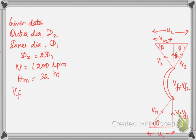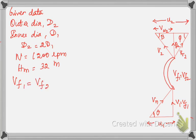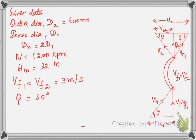The vanes are set back at an angle of 30 degrees at the outlet, so the vane angle at outlet φ = 30°. The outer diameter of the impeller is 600 mm. Converting to meters: d2 = 0.6 m. Since d2 = 2 × d1, we can now easily calculate d1.